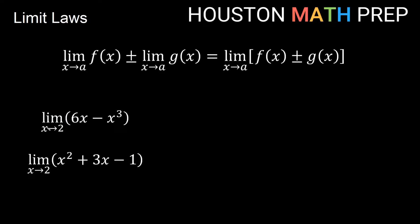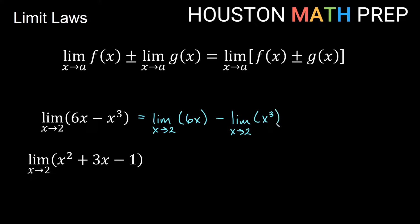Looking at an example: the limit as x approaches 2 of 6x minus x cubed. Now x equals 2 is a nice well-behaved place on this function — no weird holes or asymptotes. So this is going to be the same as the limit as x approaches 2 of 6x, minus the limit as x approaches 2 of x cubed. We plug in 2: 6 times 2 is 12, minus 2 cubed is 8, giving us a limit of 4.